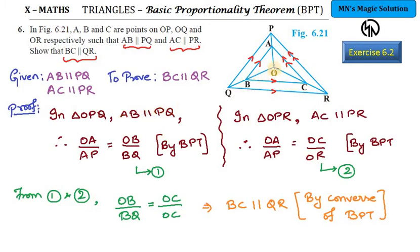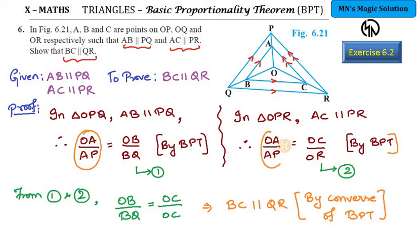So coming to our formal proof: in triangle OQP, AB is parallel to PQ, thereby by BPT we have the ratio OA by AP equal to OB by BQ — this is by BPT. Similarly, considering triangle OPR, AC is parallel to PR, therefore by BPT we have OA by AP equals OC by CR. From statements 1 and 2, since OA by AP appears in both, equating gives OB by BQ equals OC by CR, which implies by converse of BPT that BC is parallel to QR.